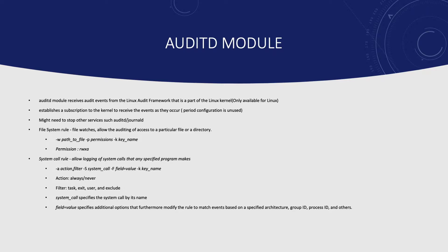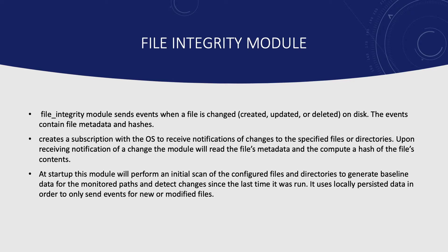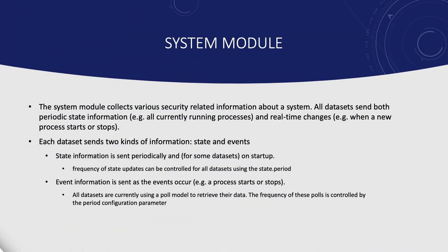Next, the file integrity module sends events when a file is changed — created, updated, or deleted on disk. It creates a subscription with the OS to receive notifications of changes to specific files or directories. When you first start this module, it performs an initial scan of all configured paths, then monitors those paths to detect any changes since you last ran it. It uses locally persisted data to send only events for new or modified files.